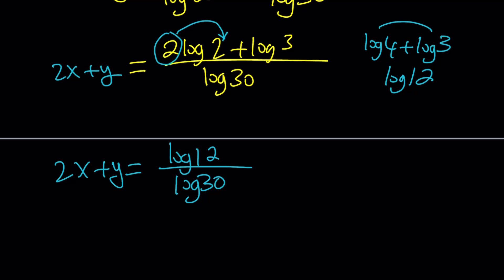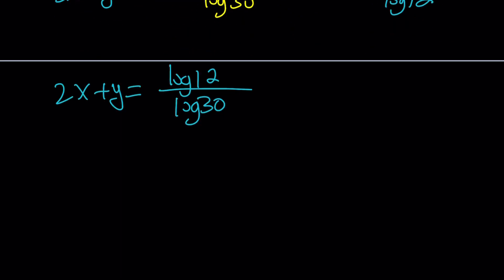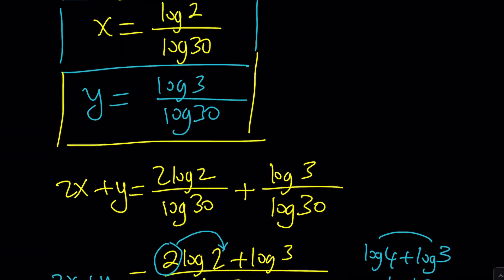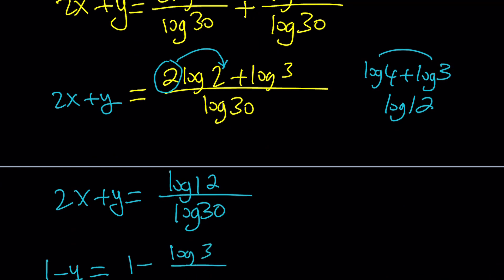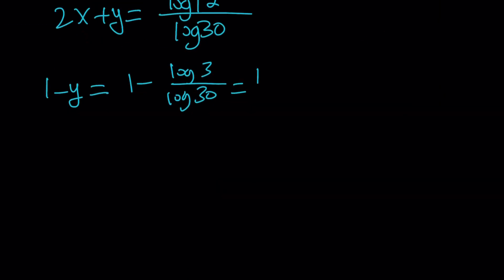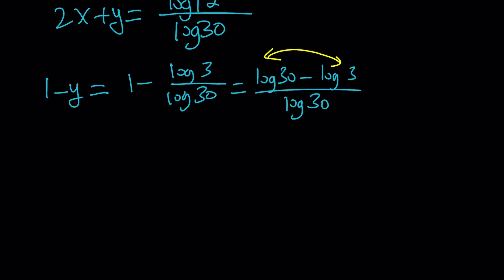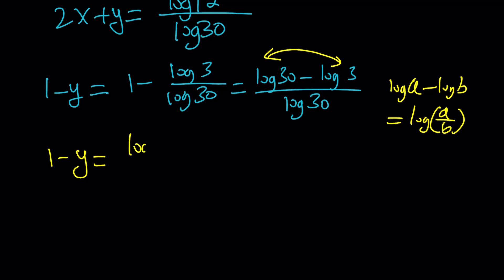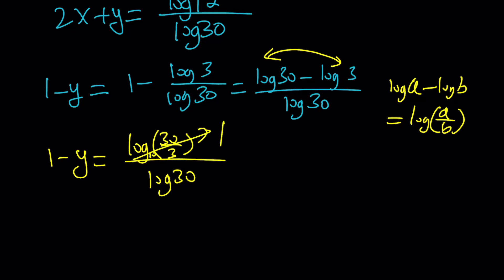Now let's work with 1 minus y. We know y equals log 3 over log 30, so 1 minus y becomes log 30 minus log 3 divided by log 30. Condensing the numerator using the quotient rule of logarithms: log 30 minus log 3 is log of 30 over 3, which is log 10. Since log base 10 of 10 equals 1, we get 1 minus y equals 1 over log 30.